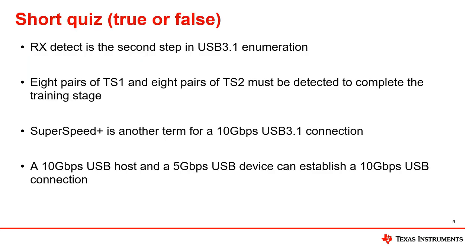Here is a quick quiz to test your knowledge of the USB 3.1 enumeration process. First: RxDetect is the second step in USB 3.1 enumeration. This is false — RxDetect is the first step in the USB enumeration process.